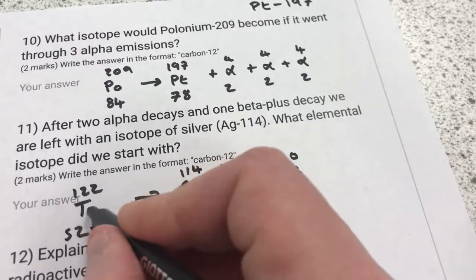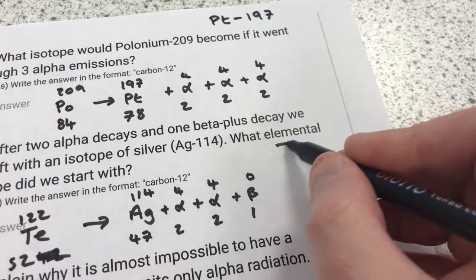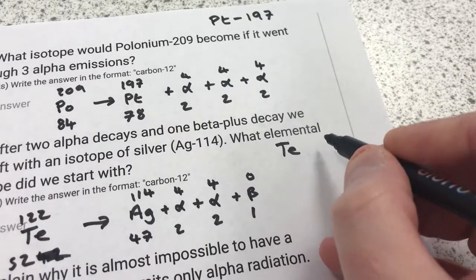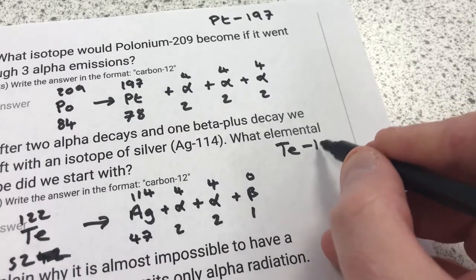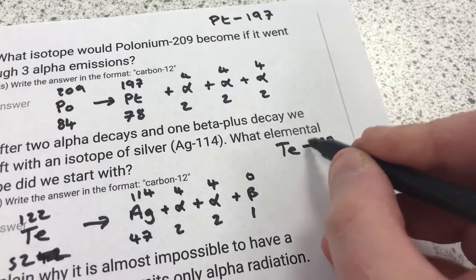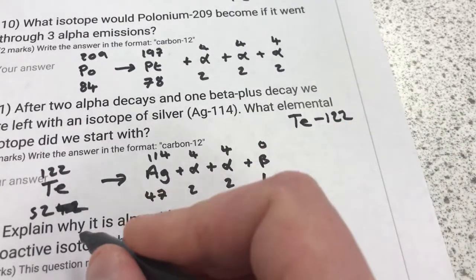So T-E for Tellurium, and then I'd write the answer as T-E, symbol for Tellurium, or I can write Tellurium dash 122. This is the isotope of Tellurium I got from these decays.